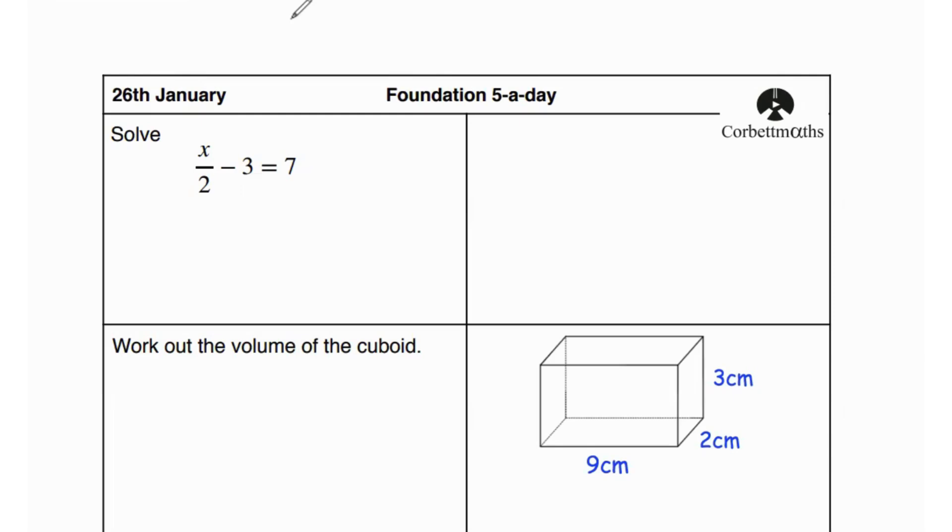The first question says solve x over 2 minus 3 equals 7. This is a very simple example of solving multi-step equations.